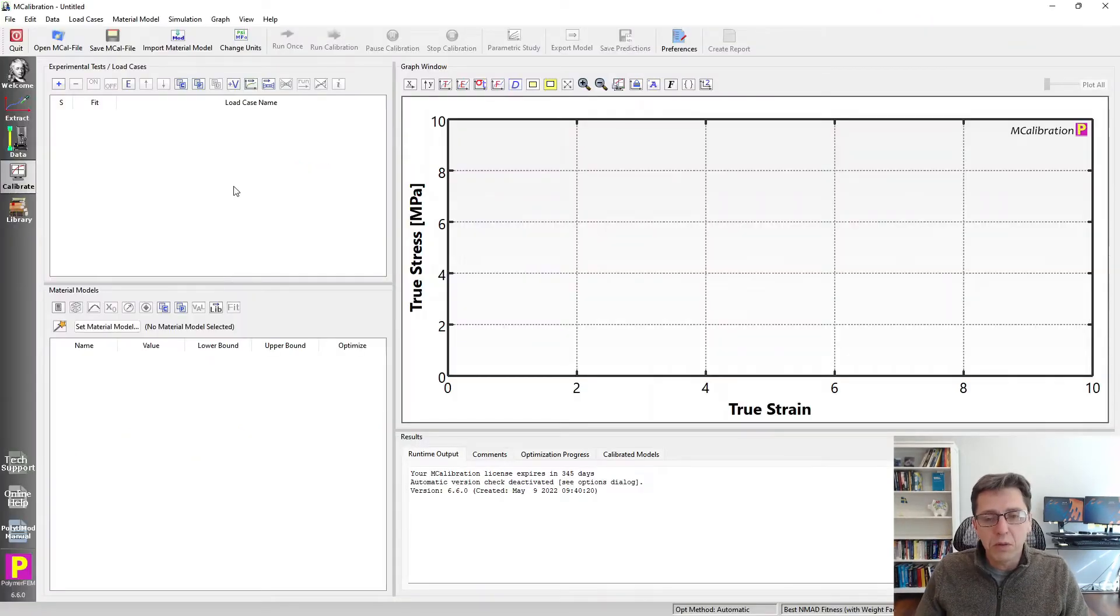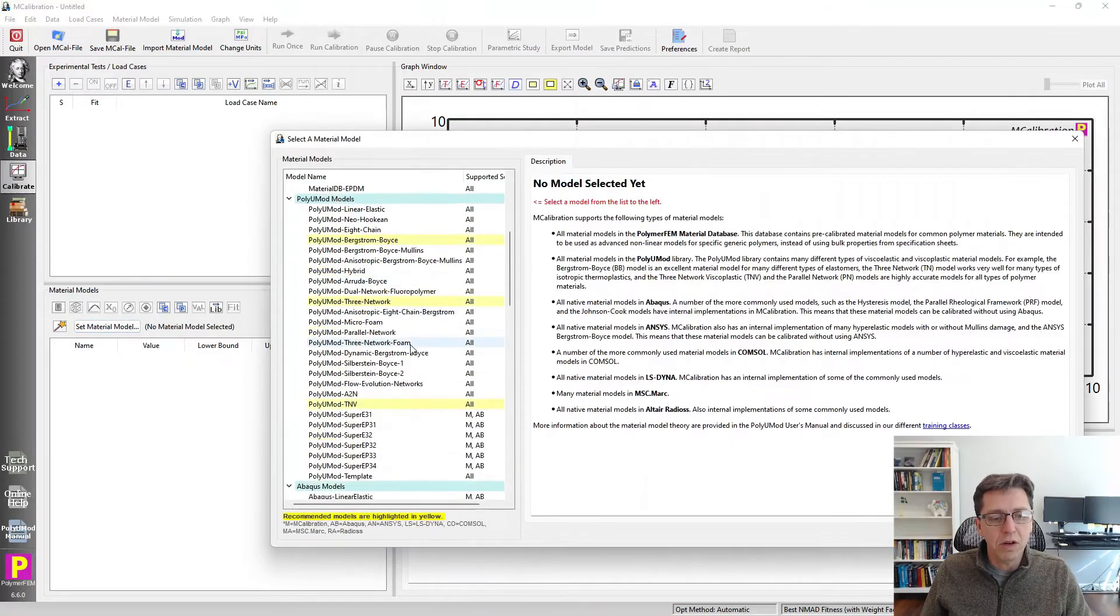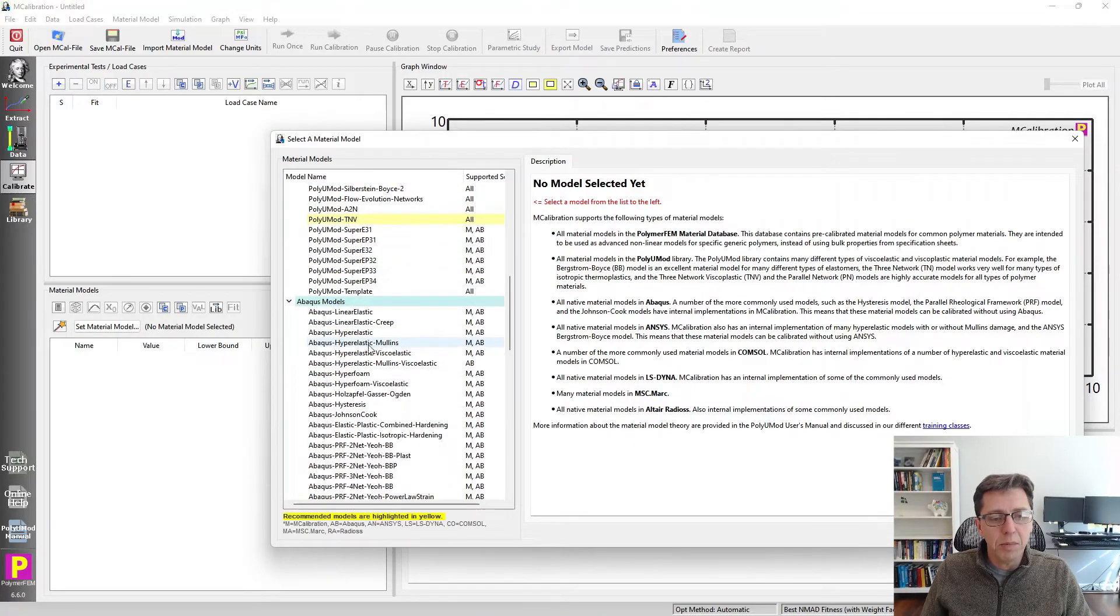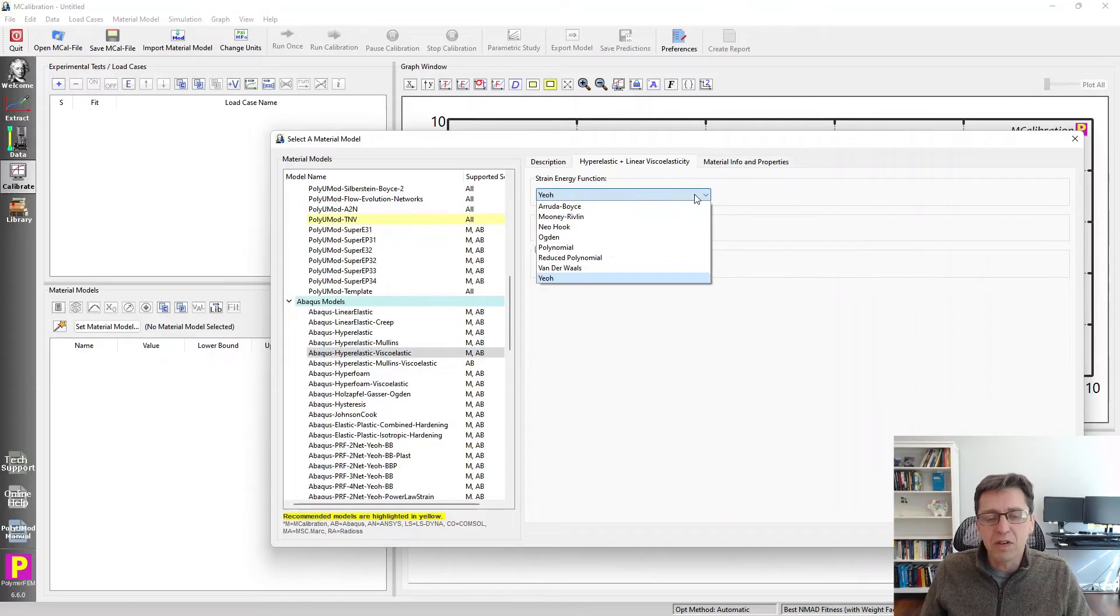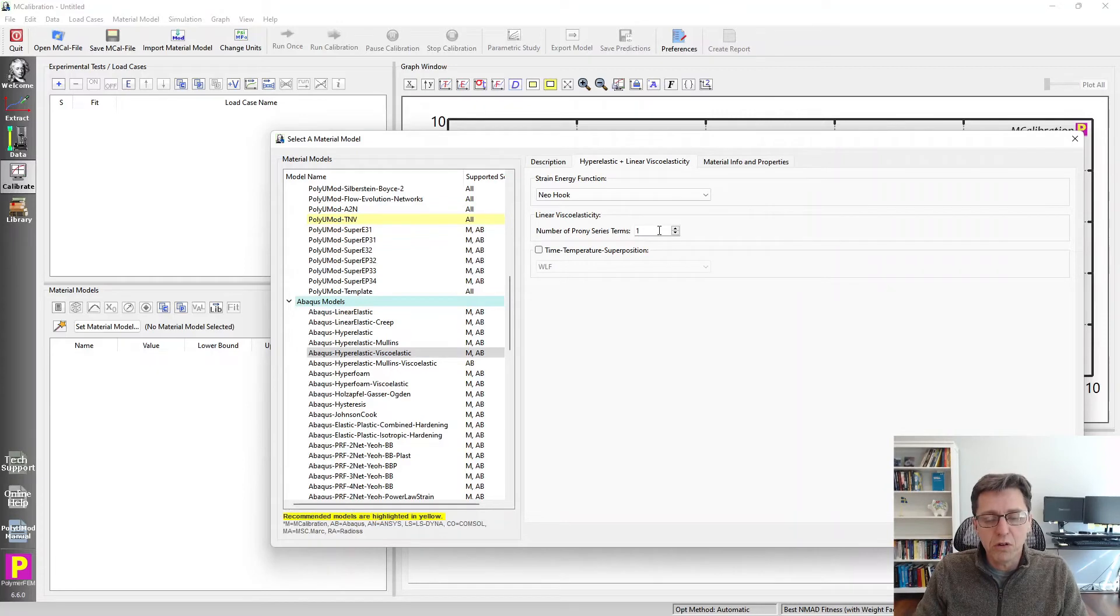So here's an empty window in MCalibration. I'm going to start by defining a material model that has this time temperature superposition activated. So I'm going to select an Abaqus hyperelastic viscoelastic material model. For simplicity, I'm going to pick some very simple hyperelastic model, perhaps the neo-Hookean one. Just picking one Prony series term is sufficient for our demonstration here.